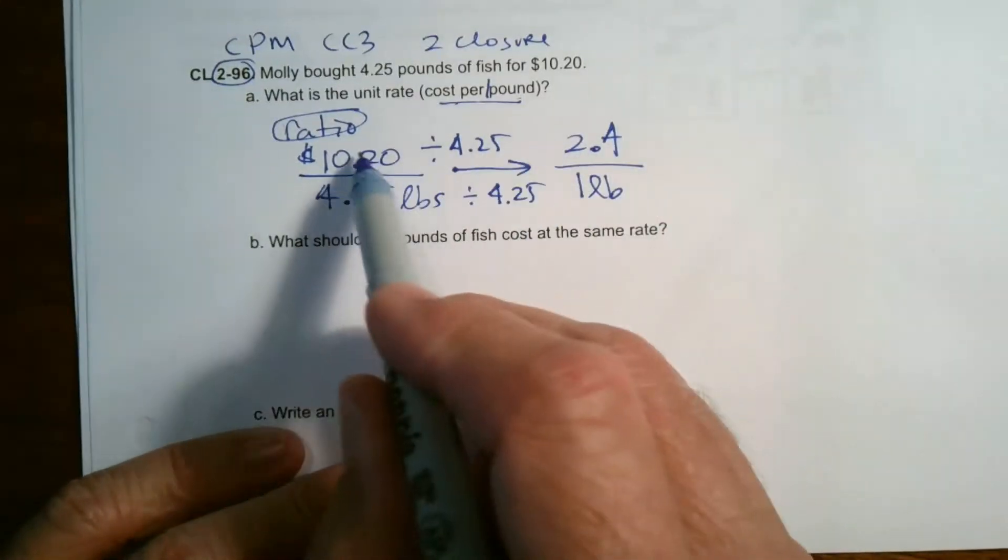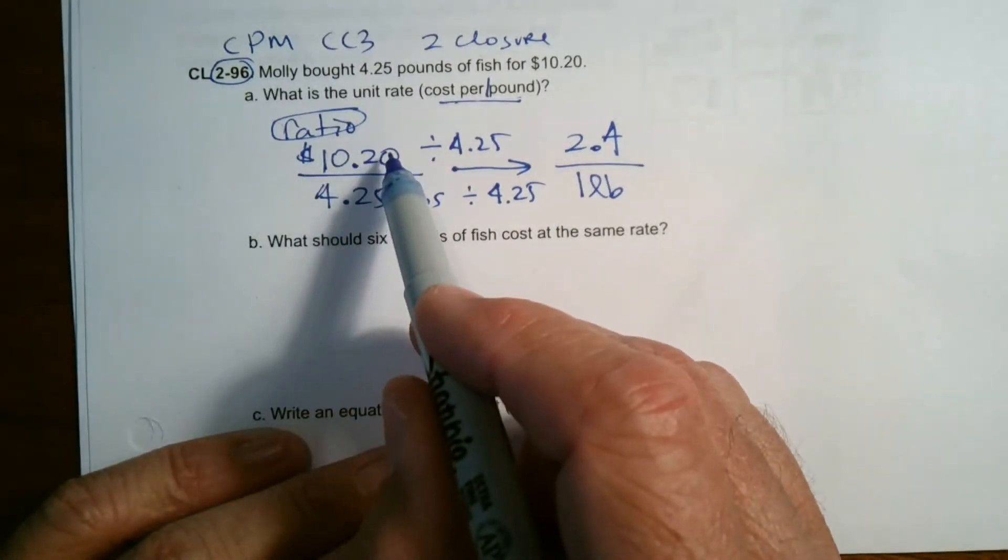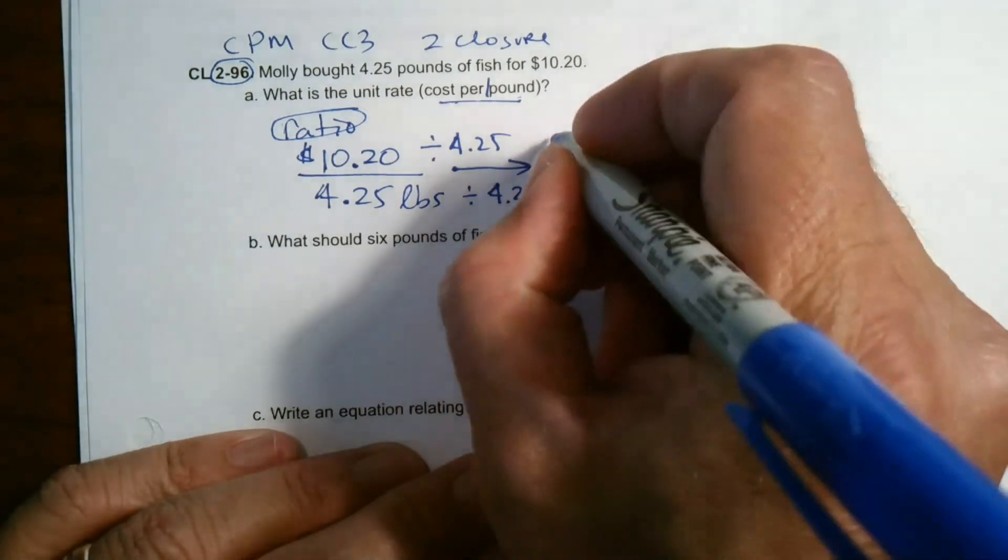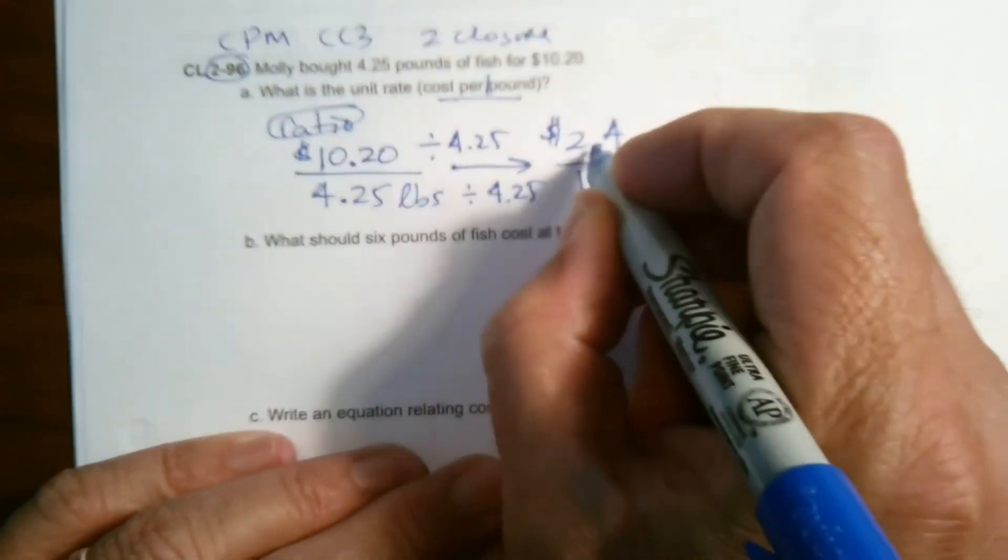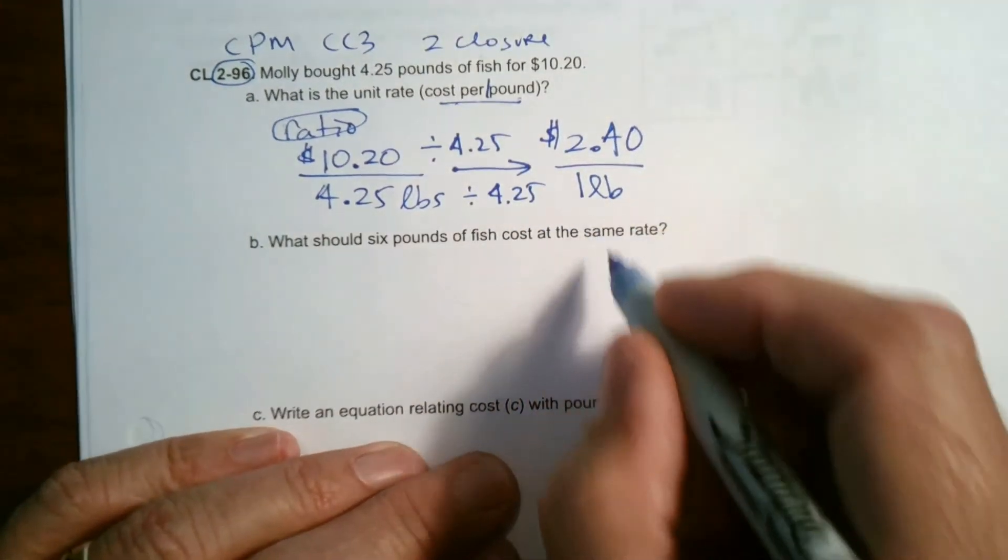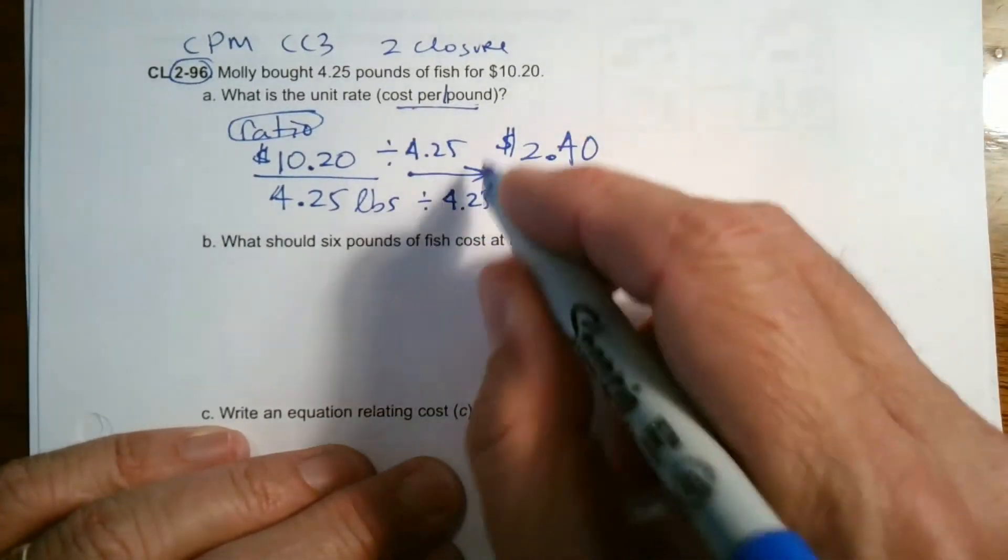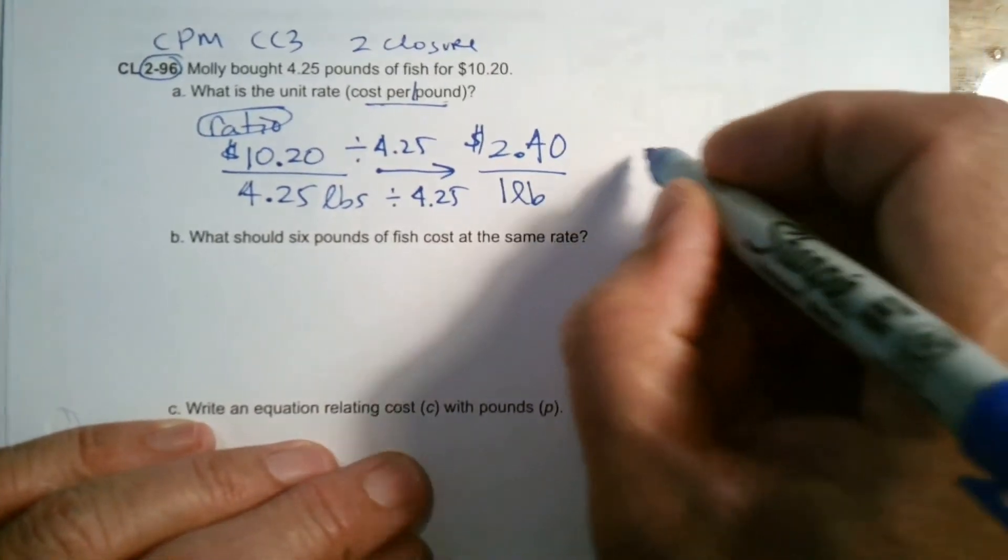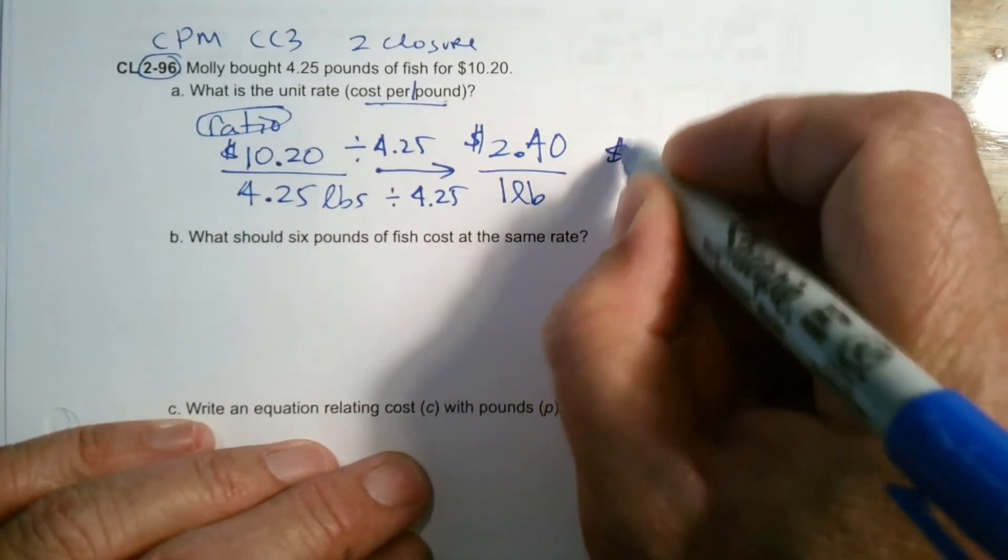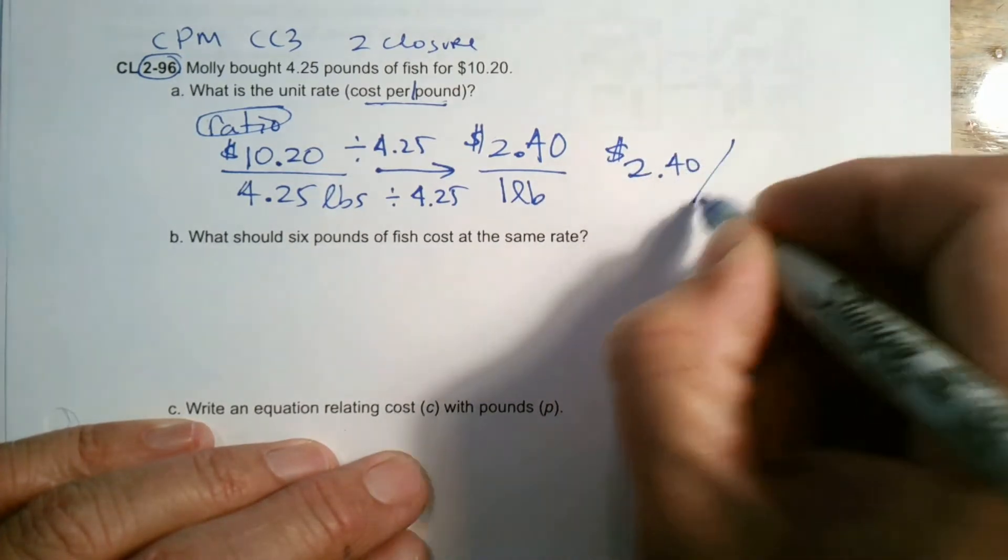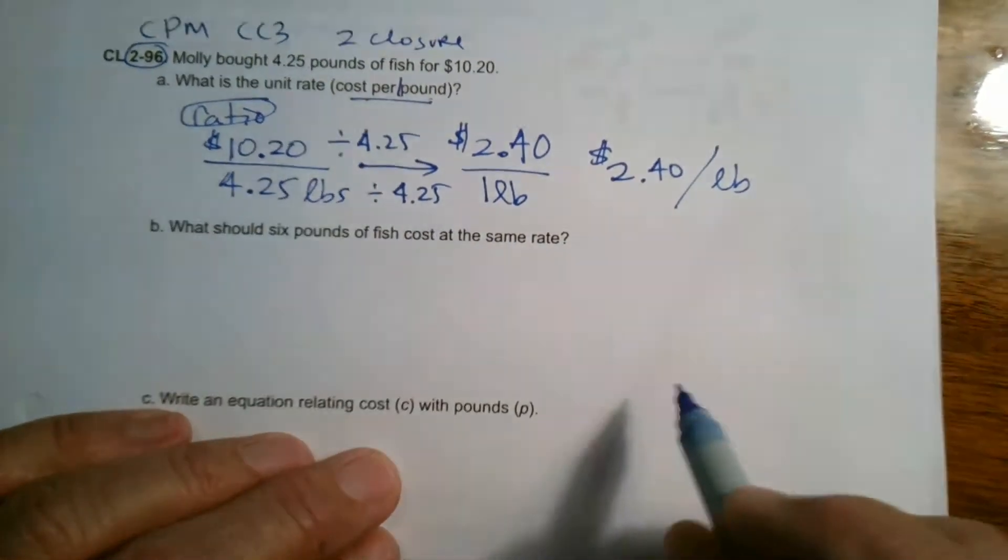So that says 2.4. What does that mean now? So up here, remember the numerator, the top of my ratio was cost. So if I convert this to cost, it's $2.40 for one pound. So that would be the unit rate right there. But sometimes you see it this way, $2.40 for every pound, right?